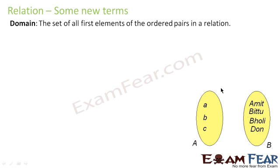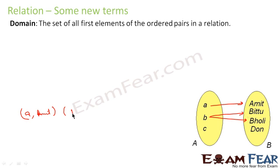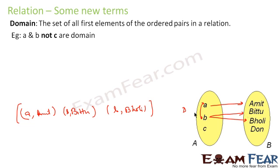Let's learn some terms in relation. Domain is the set of all first elements of the ordered pairs. In our example the relation was {(a, amid), (b, bit2), (b, boli)}, so the first elements are a and b. Therefore domain is {a, b}. Note that c is not in the domain because there is no ordered pair containing c.